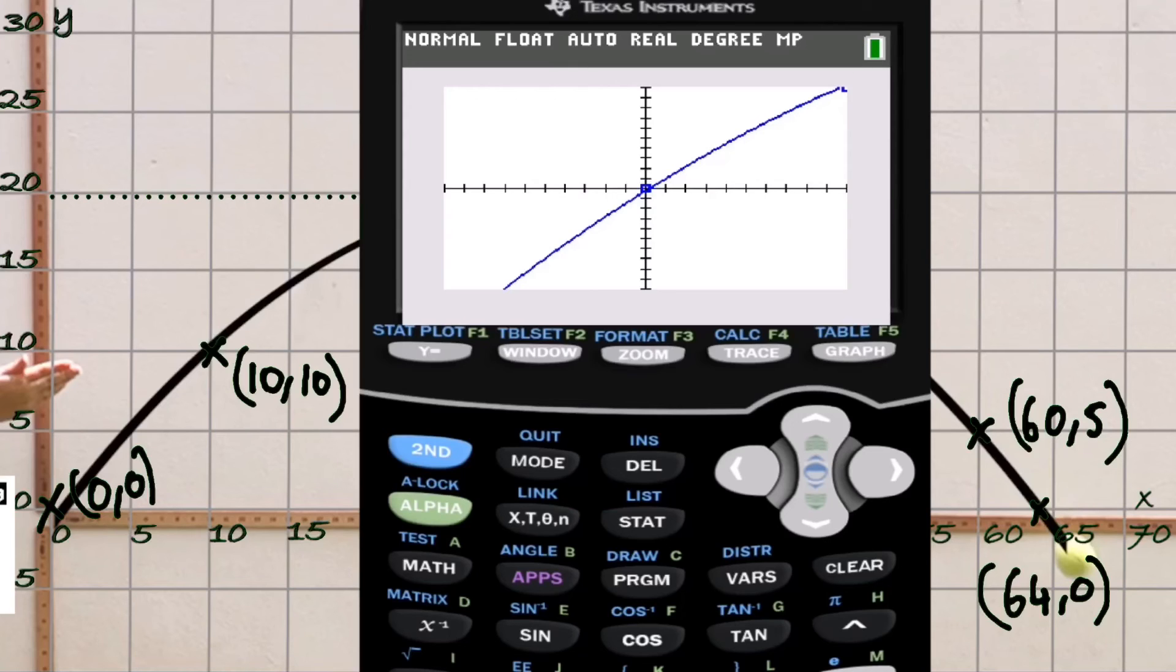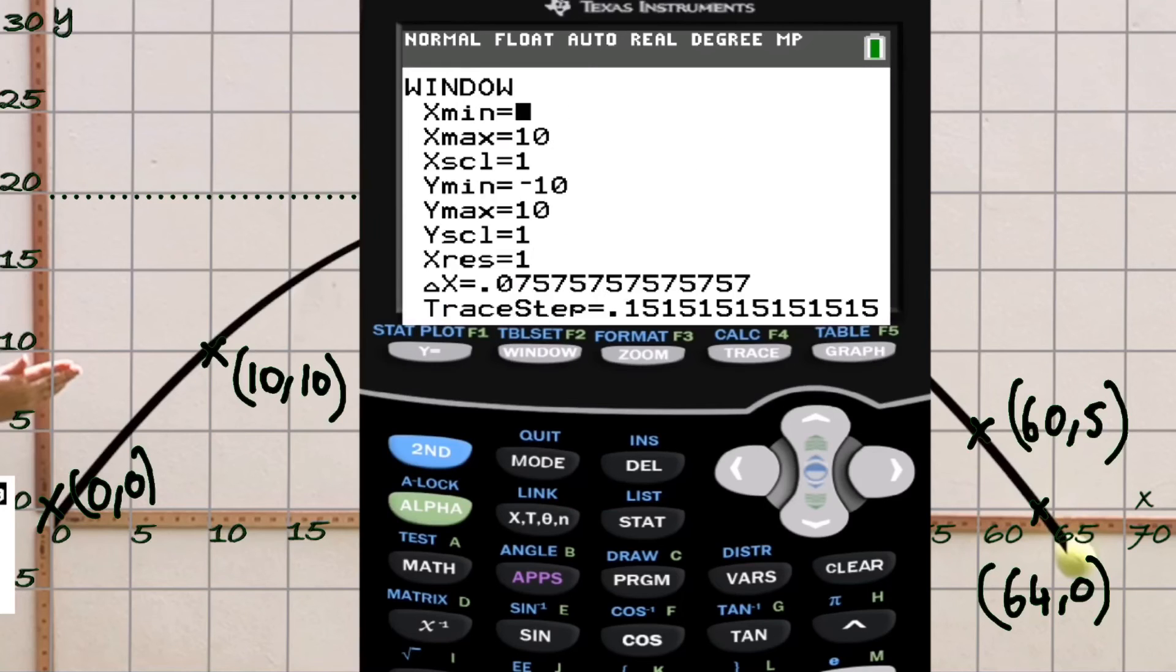Now we can graph, but you need to make sure the window is appropriate to your question. Let's go to WINDOW. Since we know the motion of the tennis ball went through the origin (0, 0), we'll do x-min at -1 so we can see it crosses the origin. The x-max we'll do at 70 since the x-intercept was at 64. We'll go up in intervals of 5. The y-min we don't need anything less than -1. The y-max only reached 20, so let's do 22, and let's go up in twos.